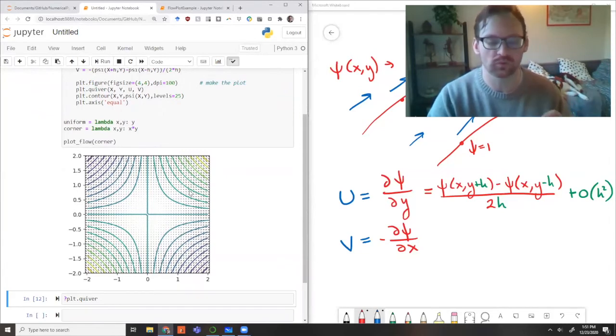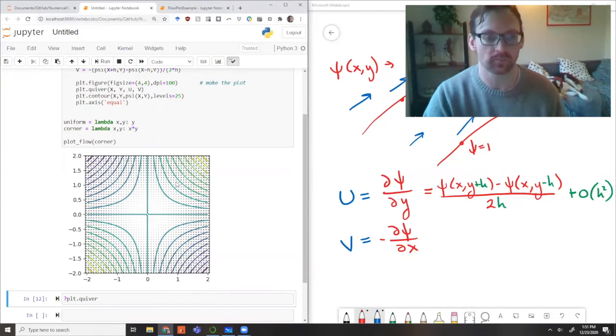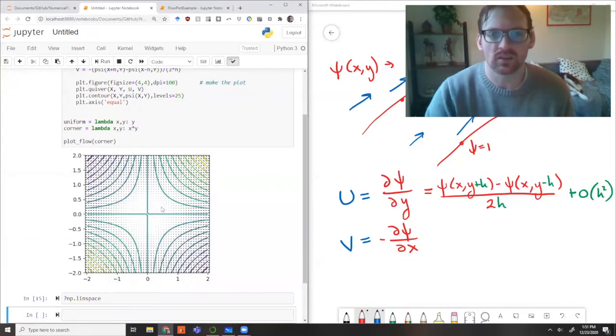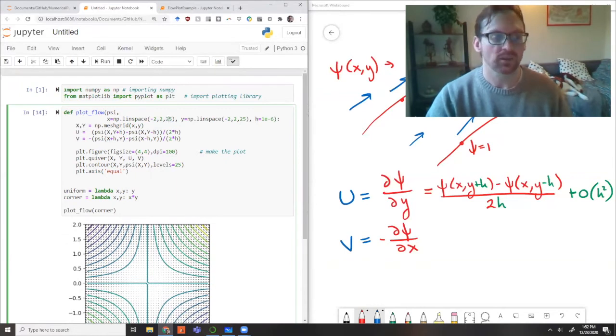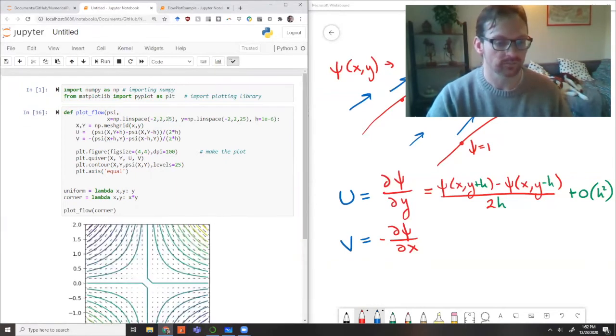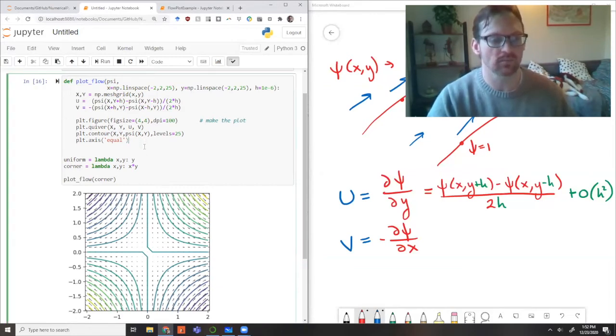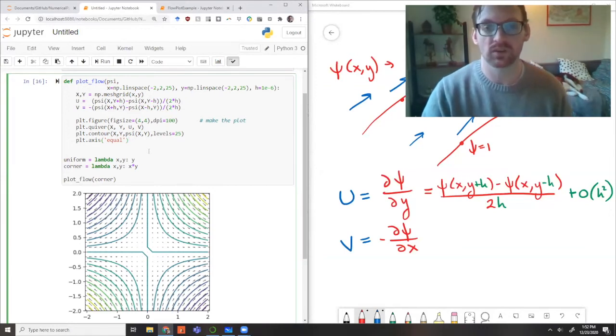When we made all the points, we used the linspace function, which has start, stop, and an optional argument for number of points that defaults to 50. We can see that 50 is too many, so let's cut that in half. Here we've just added 25 points. That looks pretty good. Now we can see the flow starts at the top in the first quadrant and moves out to the right. In each quadrant, the flow moves along a corner but in a different direction. I think this is a pretty nice basic function.